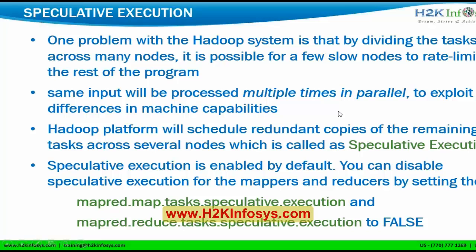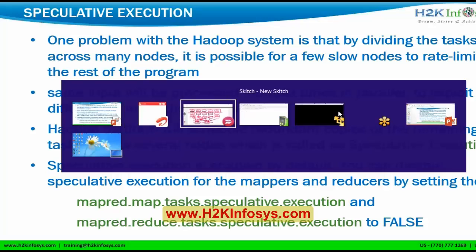The same input will be processed multiple times in parallel to exploit differences in machine capabilities. Since we have different capabilities on each machine, the same input split will be executed on multiple places. So instead of a map function executing on a single task tracker, the same map function will be run on multiple task trackers simultaneously in parallel.